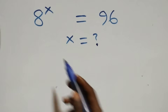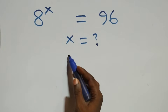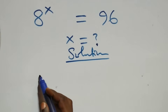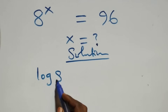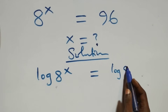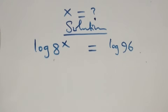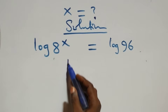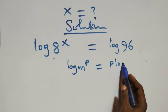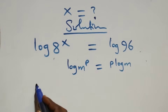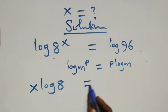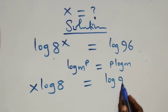Hello, welcome. Here's how to solve this exponential equation. We take the log on both sides: log of 8 raised to power x equals log of 96. We then apply the power rule of logarithms, where log n raised to power p is the same as p log n. This gives us x log 8 equals log 96.